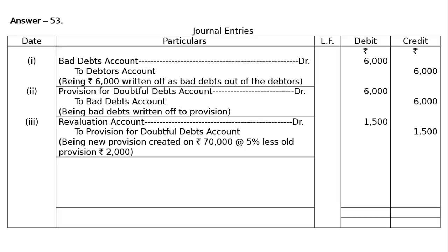The third entry is: Revaluation account debited to Provision for Doubtful Debts — being new provision created on debtors. Rs.76,000 was available; out of that Rs.6,000 became bad, leaving Rs.70,000. New provision at 5% on Rs.70,000 is Rs.3,500. Old provision remaining after writing off Rs.6,000 bad debt is Rs.2,000. So new provision required is Rs.3,500 minus Rs.2,000 old provision remaining, giving Rs.1,500. Revaluation account Dr to Provision for Doubtful Debts Rs.1,500.